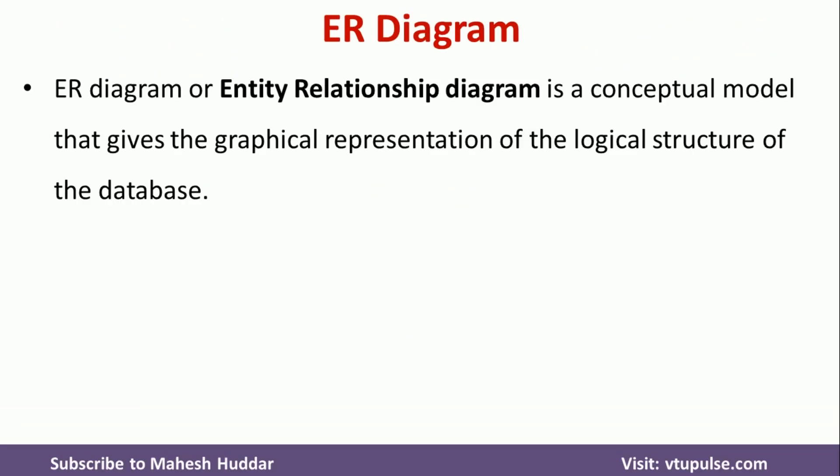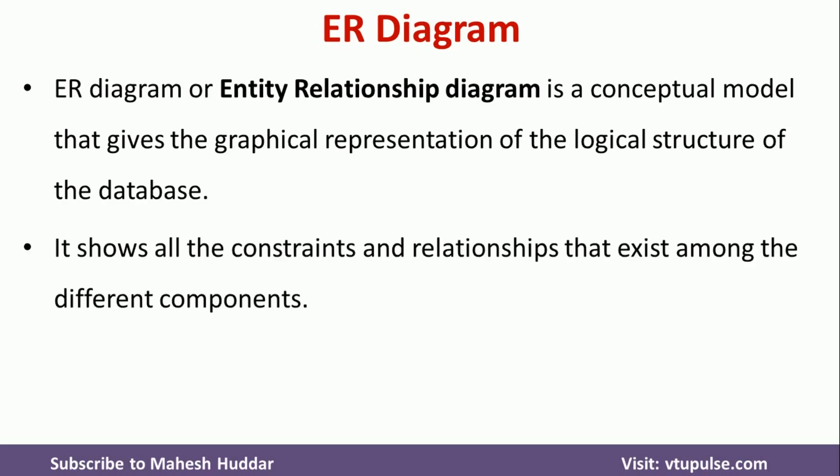An Entity Relationship Diagram is a conceptual model that gives a graphical representation of the logical structure of the database. It shows all the constraints and relationships that exist among the different components of the database. We may have some different constraints like primary key, foreign key, or composite key, and different relationships between different parts of the database.